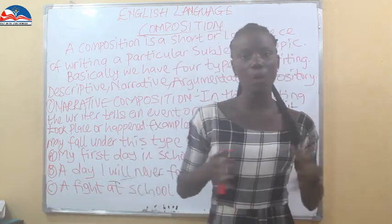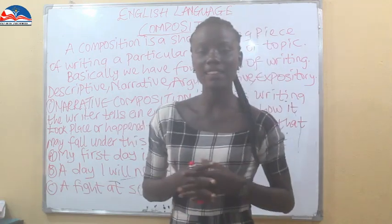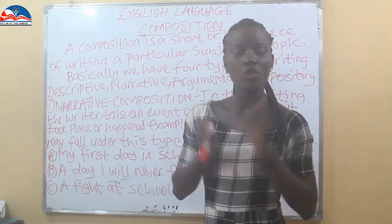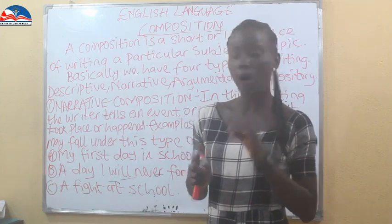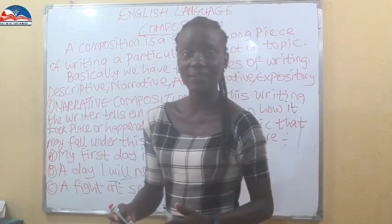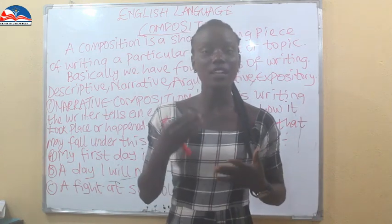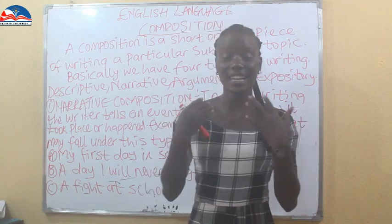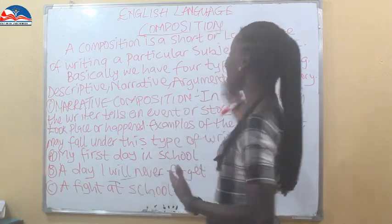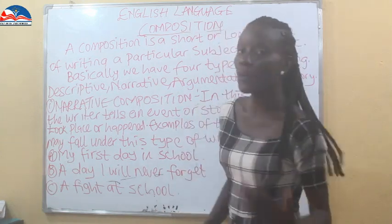We have the narrative composition. When you're asked to write about an event, narrative composition is where the writer tells us about an event — a story, and how it took place or happened. Narrative, as the name suggests, means you are trying to narrate an event you witnessed, to explain to us the way an event occurred and how it happened.